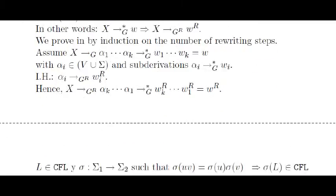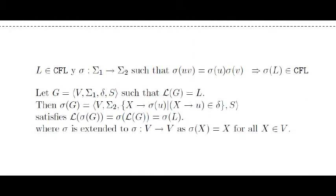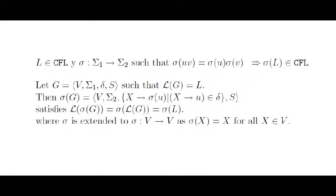Context-free languages are also closed by morphism. That is, if there is a grammar for a language, then there is also a grammar for its image under any morphism. The new grammar is easily obtained by applying the morphism to the right hand side of the rules of the initial grammar.